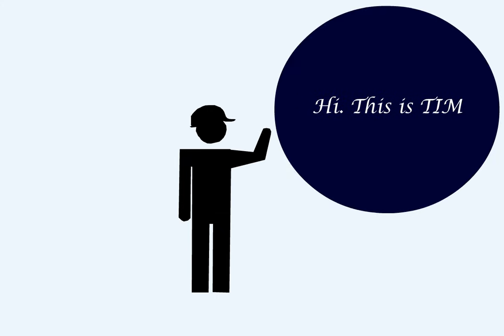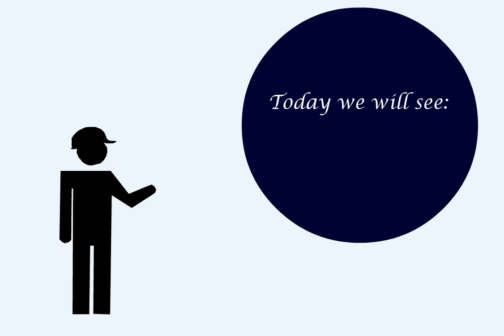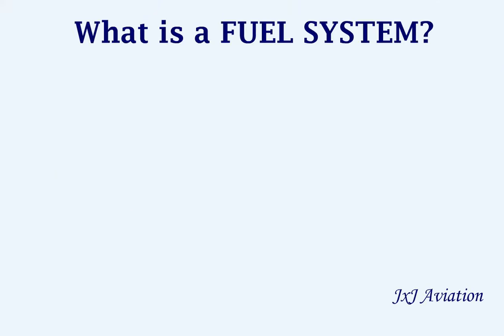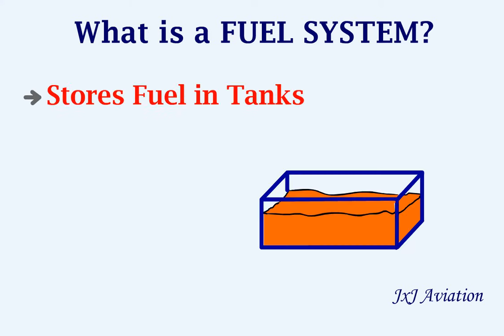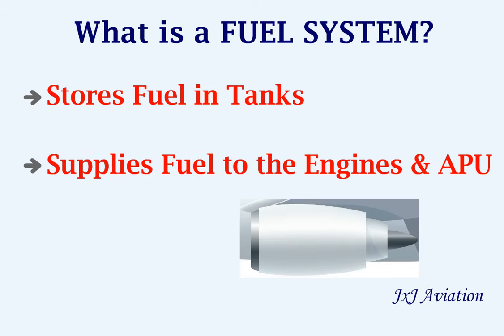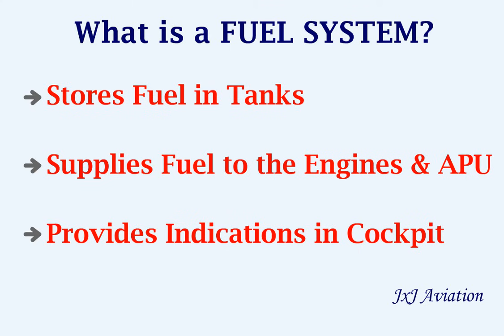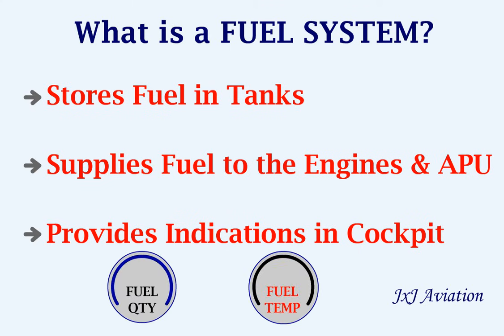Hello, this is Tim. Today we will talk about the fuel system of an aircraft. First, let's see what a fuel system is. The fuel system stores fuel in the tanks and then supplies this fuel to the engines and the APU. It also provides indications such as the fuel quantity and the fuel temperature in the cockpit.